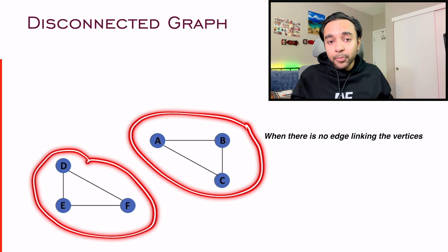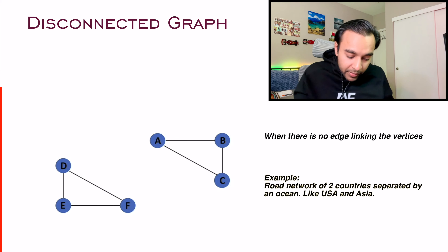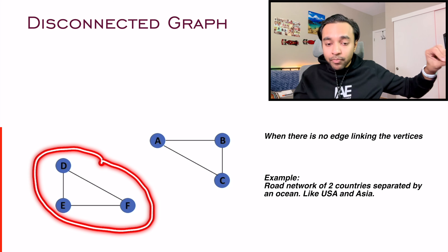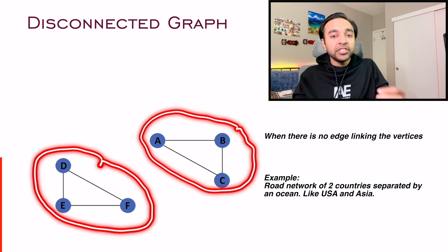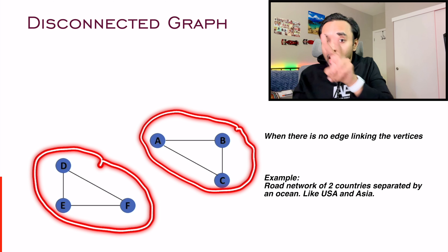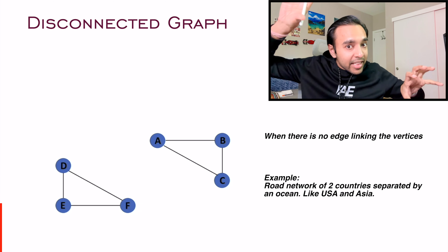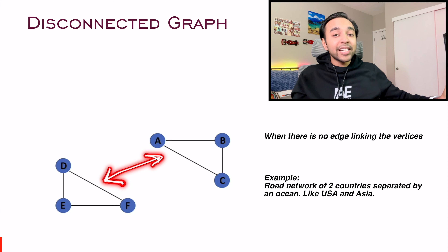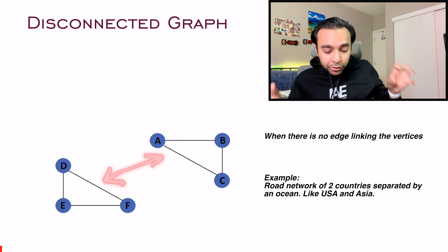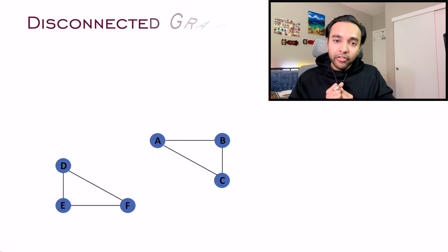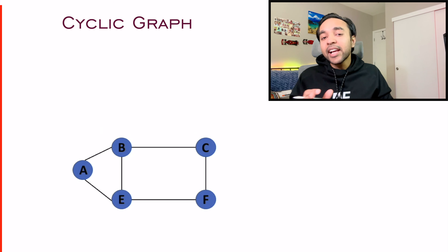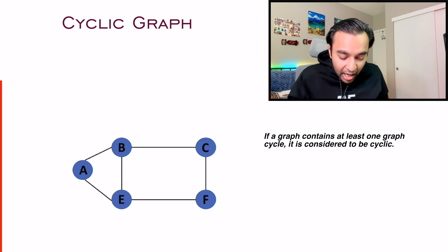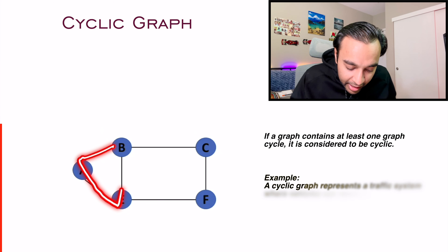Coming from connected graphs, the next type is disconnected graphs. Two graphs may be valid in themselves but not connected with each other. For example, one graph could represent all the roads in the United States and another could represent all the roads in Asia. All the roads within each graph are connected internally, but there is no connection between a road in the United States and one in Asia — so this is a disconnected graph.